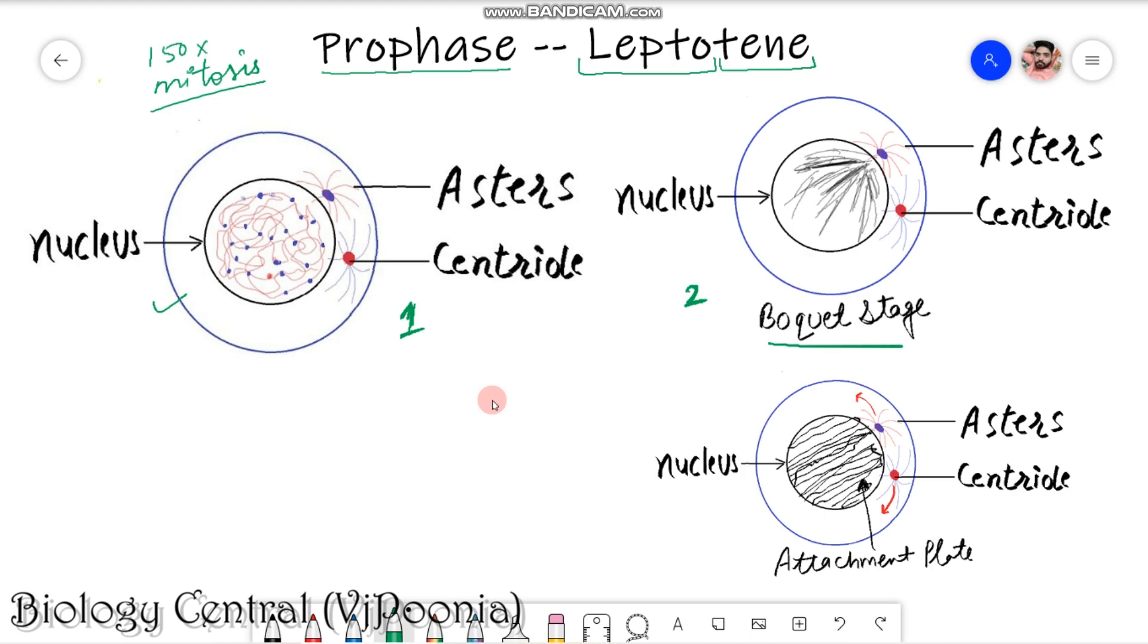They will telomerically, which means the end of a chromosome is called telomere, and telomerically they will start to arrange itself on the side where any one of the centrosome is present. So first stage is bouquet stage.